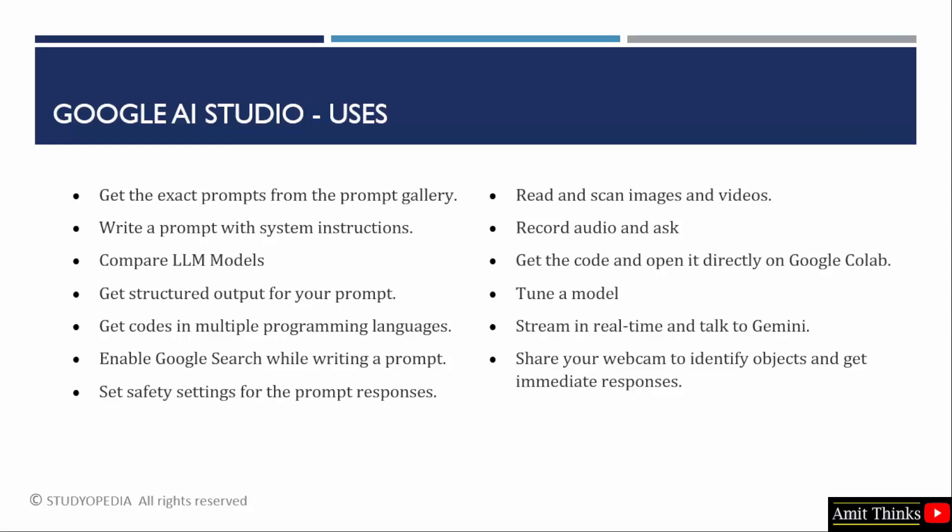You can easily upload images and video and use Google AI Studio to read and scan them. You can also give audio prompts. For your projects, easily get code on the click of a button, and you can also open that code directly on Google Colab. You can tune a model easily based on a specific task. An awesome feature provided by Google AI Studio is streaming in real-time — talk to Gemini easily, share your screen, or share your webcam.